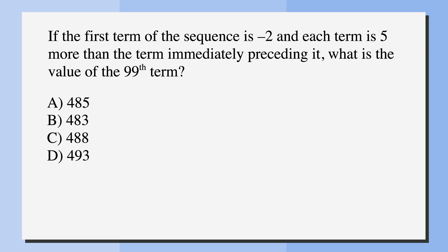If the first term of the sequence is -2, and each term is 5 more than the term immediately preceding it, what is the value of the 99th term? Our answer choices are A, 485; B, 483; C, 488; and D, 493.